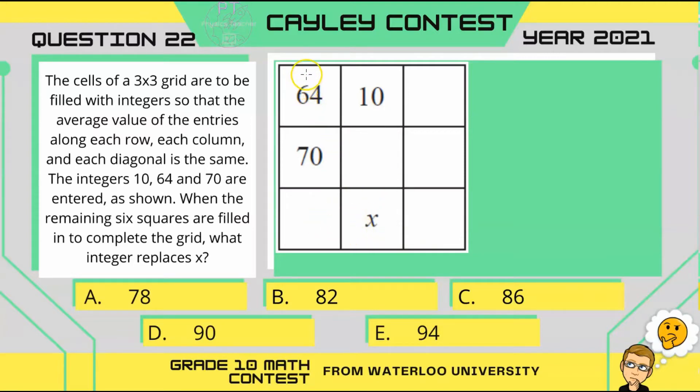So, let's look at this first column here. Let's say we have 64 plus 70 plus some integer, let's say n. So, if we were to find the total in that column, we would get 64 plus 70, which is 134, and then we would have plus n.